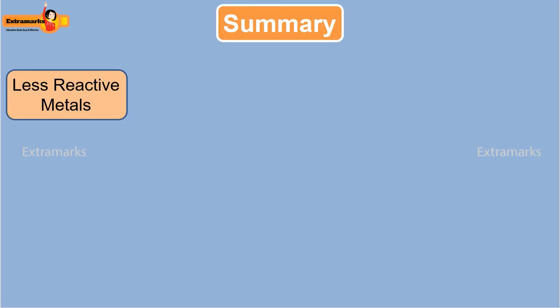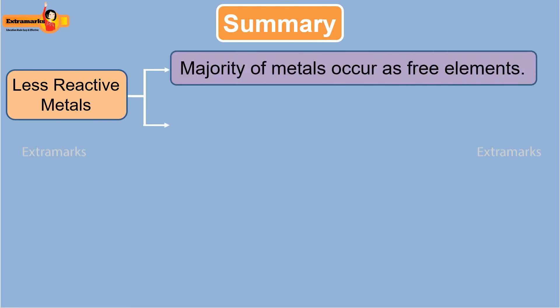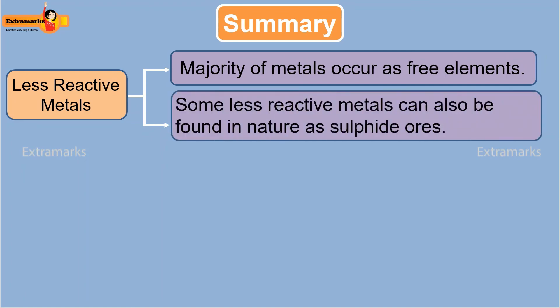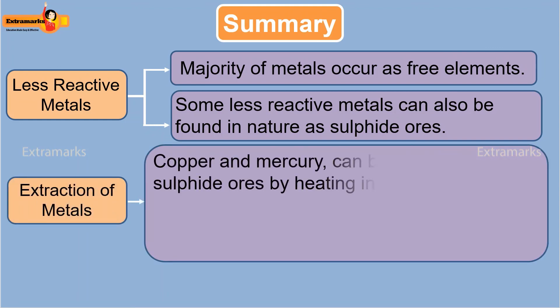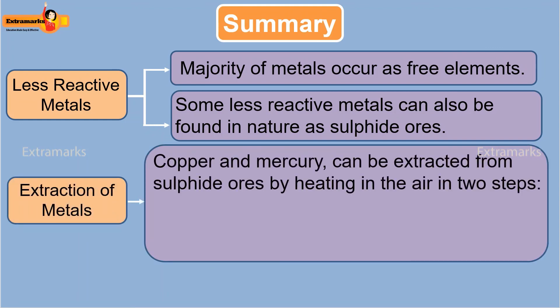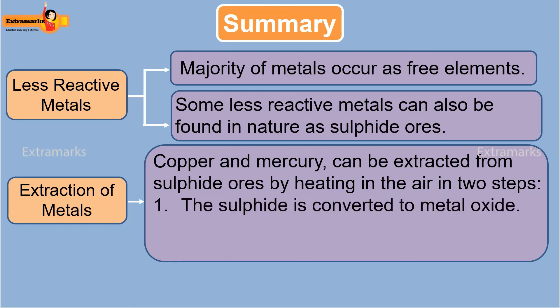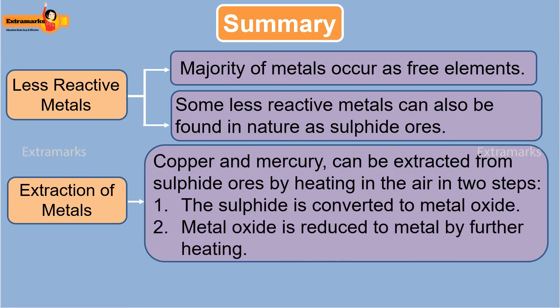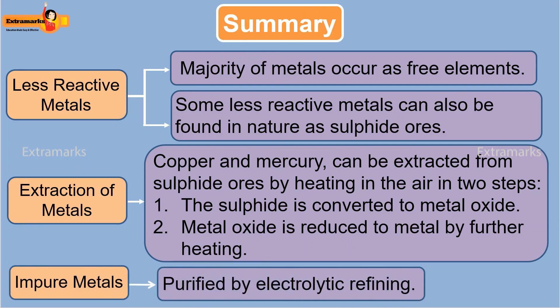Let's recall what we have learned. The majority of metals with low reactivity occur as free elements in the earth's crust, and some less reactive metals can also be found in nature as sulfide ores. Less reactive metals such as copper and mercury can be extracted from sulfide ores by heating in air in two steps: the sulfide is first converted to metal oxide, which is then reduced to metal by further heating. The metals are then purified by electrolytic refining.